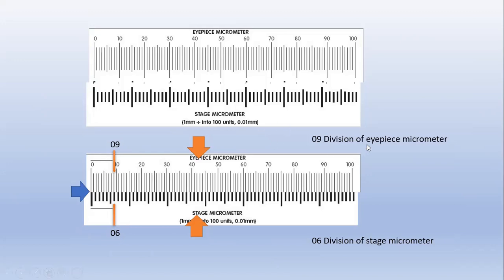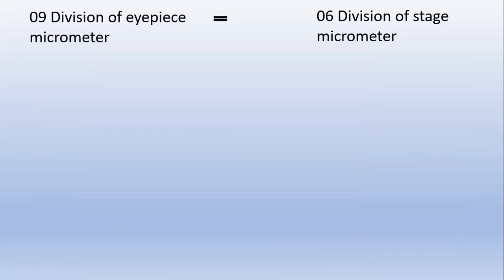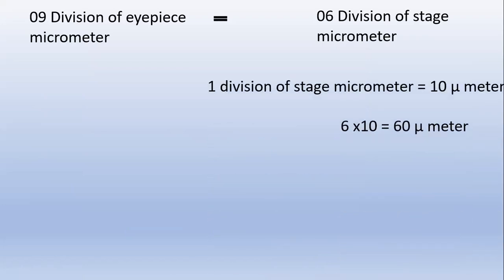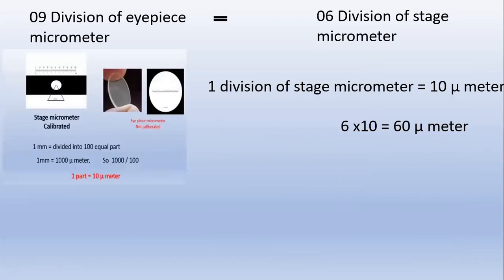Remember: nine divisions of the eyepiece micrometer are equal to six divisions of the stage micrometer. As established earlier, one division of the stage micrometer is equal to 10 micrometers — shown here by the red color in the slide. So six divisions of the stage micrometer equal 60 micrometers.